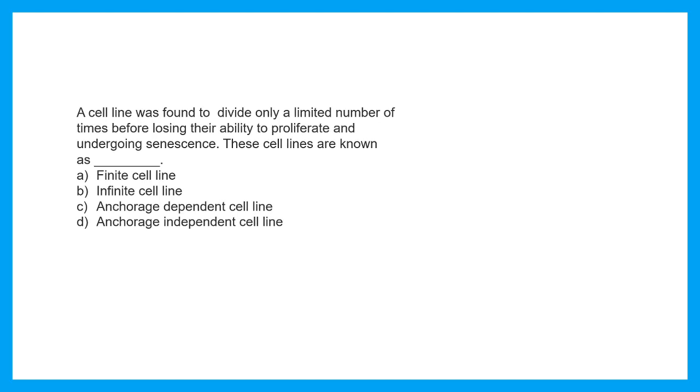A cell line was found to divide only a limited number of times before losing their ability to proliferate and undergoing senescence. These cell lines are known as finite cell line, infinite cell line, anchorage dependent cell line, or anchorage independent cell line. This is another very important concept that you need to know.